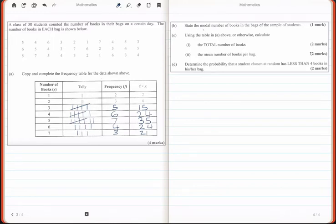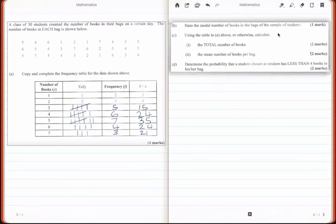It says state the modal number of books in the bags of the sample of students. So what does modal mean? Modal simply means the value with the highest frequency. So we look at our table, we see that the largest frequency is seven and that corresponds to the number five. So students tend to have five books in their bag.